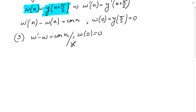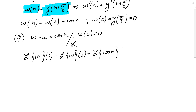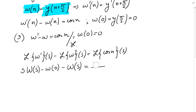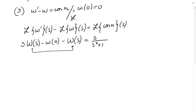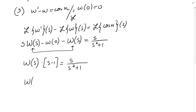Applying Laplace transform to both sides, we get the Laplace transform of w prime of s minus the Laplace transform of w of s equals the Laplace transform of cos(n) of s. So we get s times W(s) minus w(0) minus W(s) equals s over (s squared plus 1), from the table. Since w(0) is 0, we factor to get W(s) times (s minus 1) equals s over (s squared plus 1), so W(s) equals s over [(s minus 1)(s squared plus 1)].